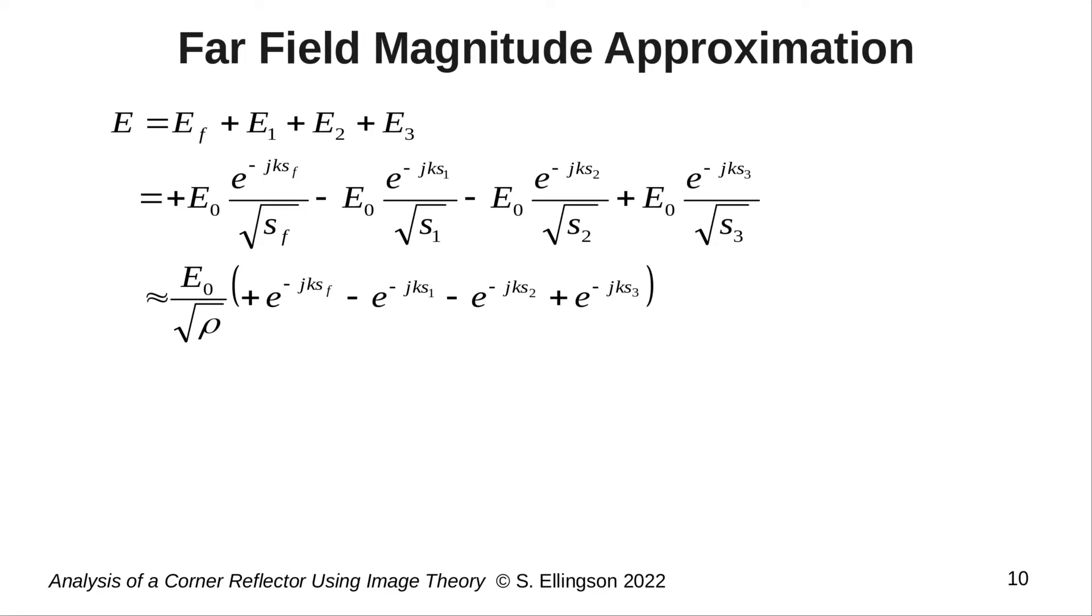Now we can invoke the far field magnitude approximation. That is, in the far field, the small differences in the distances in the denominators of each term have negligible effect. So we can approximate all four distances, S sub f, S sub 1, S sub 2, and S sub 3, as the single distance rho. And then extract that common factor of the square root of rho, as I've shown here.